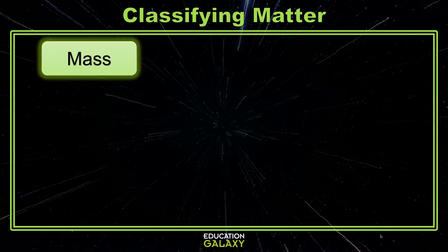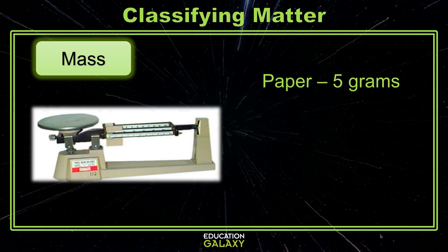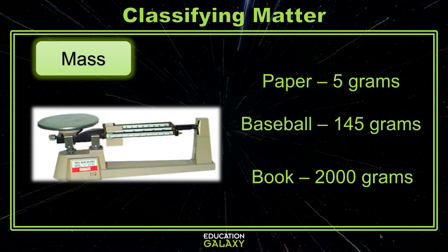Mass is a measure of how much matter or how much stuff is in an object. We measure mass in grams and we can use a triple beam balance to find the mass of objects. For example, the mass of a piece of paper is about 5 grams, the mass of a baseball is about 145 grams, and the mass of a large textbook is about 2,000 grams.